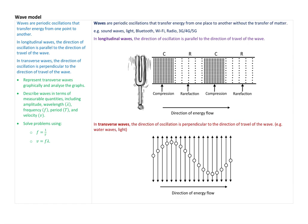In a longitudinal wave, the particles vibrate backwards and forwards in the same direction as the direction the wave travels — that's the direction of energy flow. In a transverse wave — like a wave on the ocean — the particles vibrate perpendicular to the way the energy flows. So the particles go up and down while the energy flows horizontally. The key difference: in a transverse wave, particles oscillate at 90 degrees to the direction of travel; in a longitudinal wave, they vibrate in the same direction as energy transfer. These can be demonstrated well using a slinky spring.